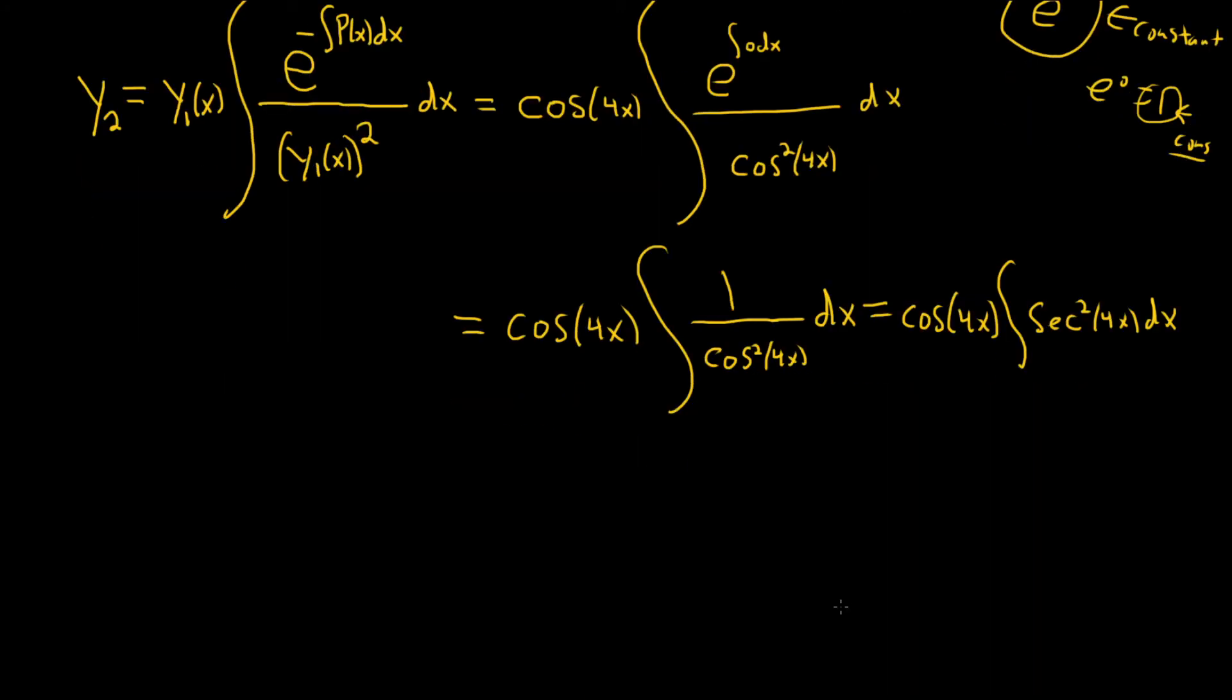So this is equal to the cosine of 4x times secant squared of 4x dx. So what's a function whose derivative is secant squared? Tangent, right? The derivative of tangent is secant squared.